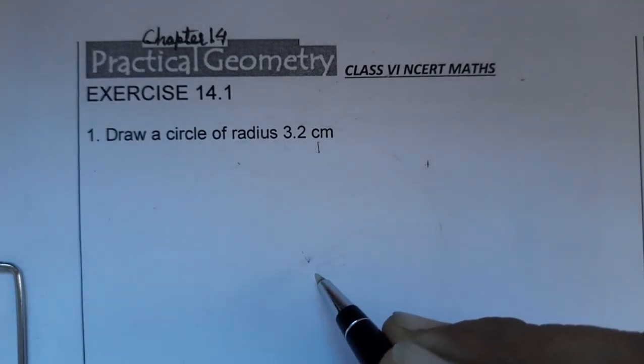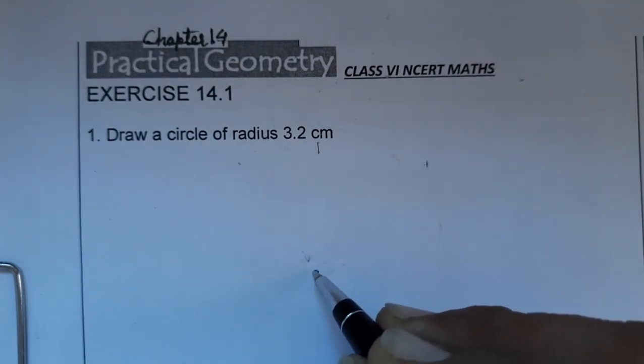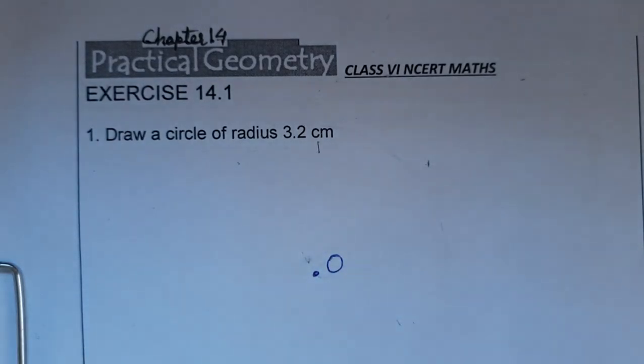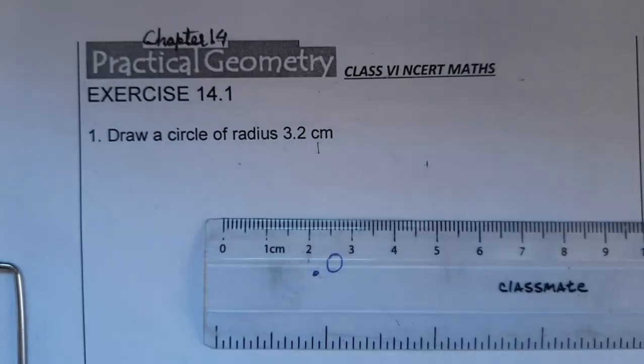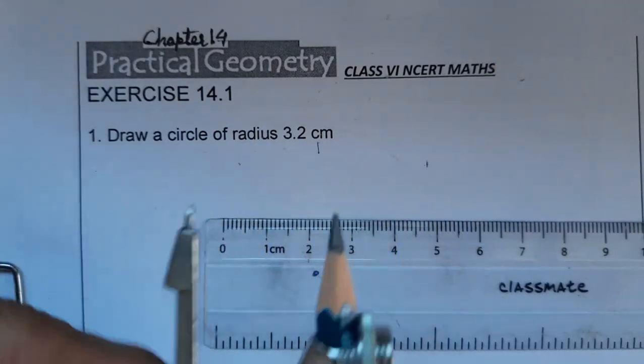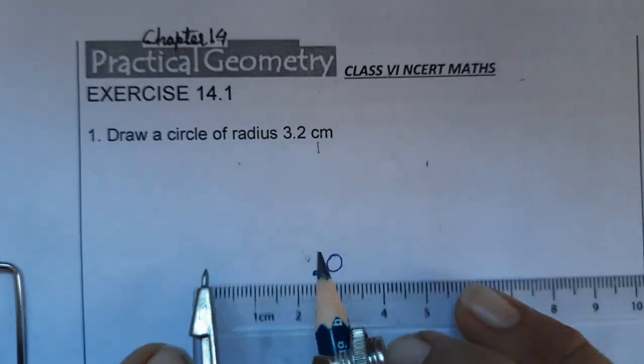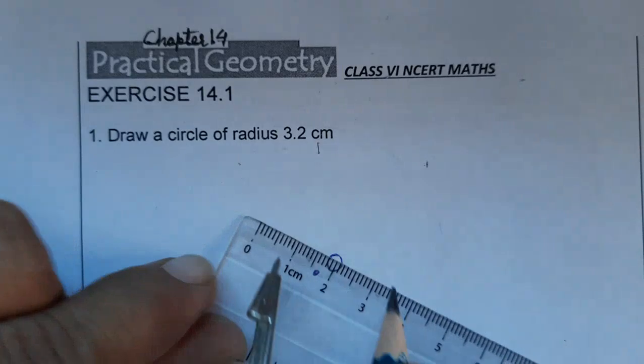First of all, we will take one center. We are marking the center and giving it the name O - any name we can give. Now take the ruler and compass. This is the pointer, this is the pencil pointer. Now we are going to measure 3.2 centimeter with the help of ruler and compass.